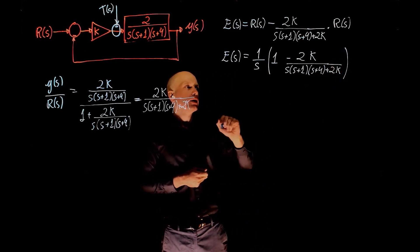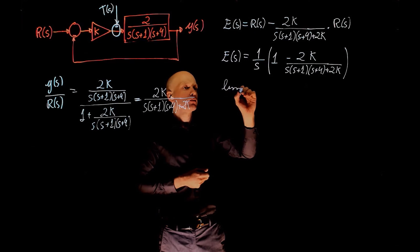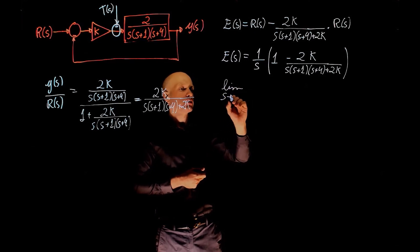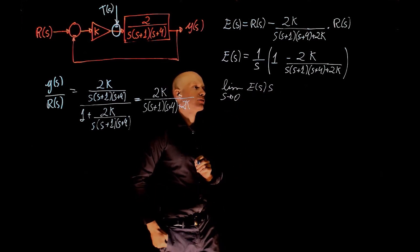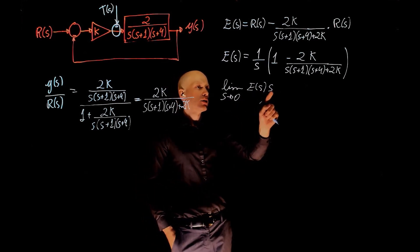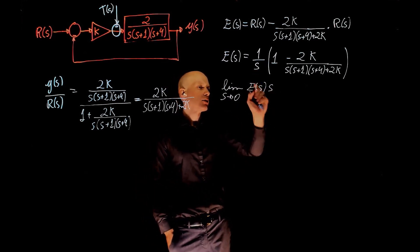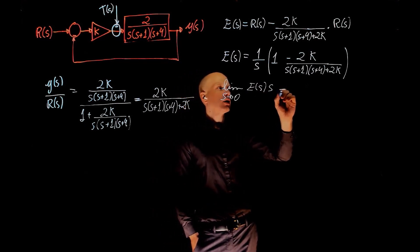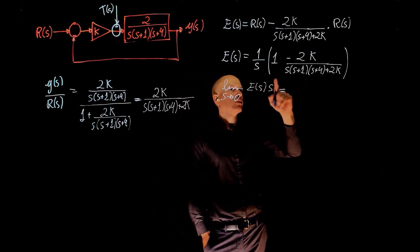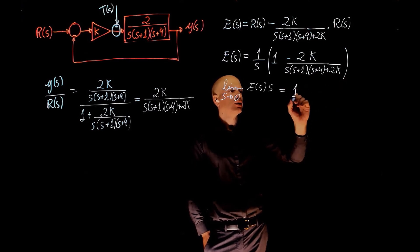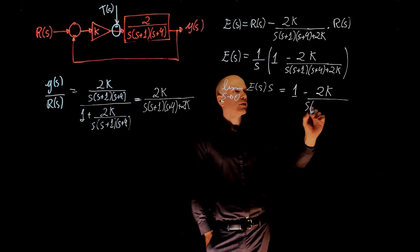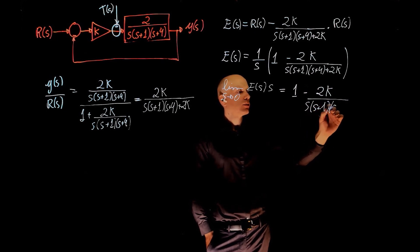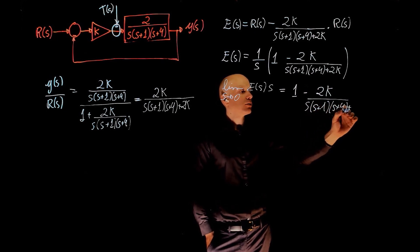The steady state error is the limit when S tends to zero of E times S. So this S will cancel that S. And this is now the limit of the remaining of this function here. 1 minus 2K/(S(S+1)(S+4) + 2K).